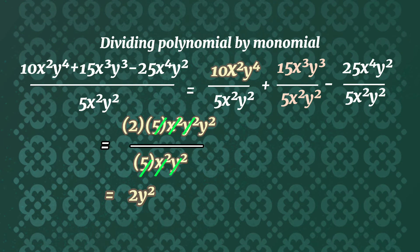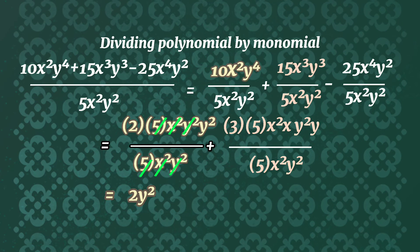Let's divide 15x³y³ by 5x²y². The GCF of 15 and 5 is 5. The GCF of x³ and x² is x². The GCF of y³ and y² is y². Thus, the common monomial factor is 5x²y². Remove this so that the remaining is the quotient, which is 3xy.